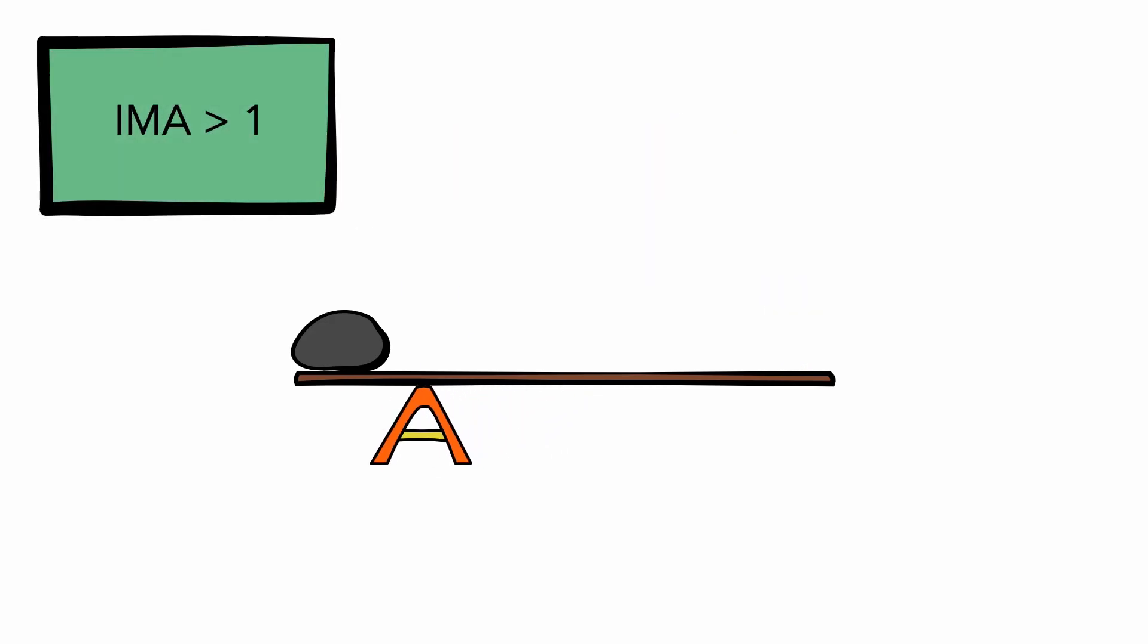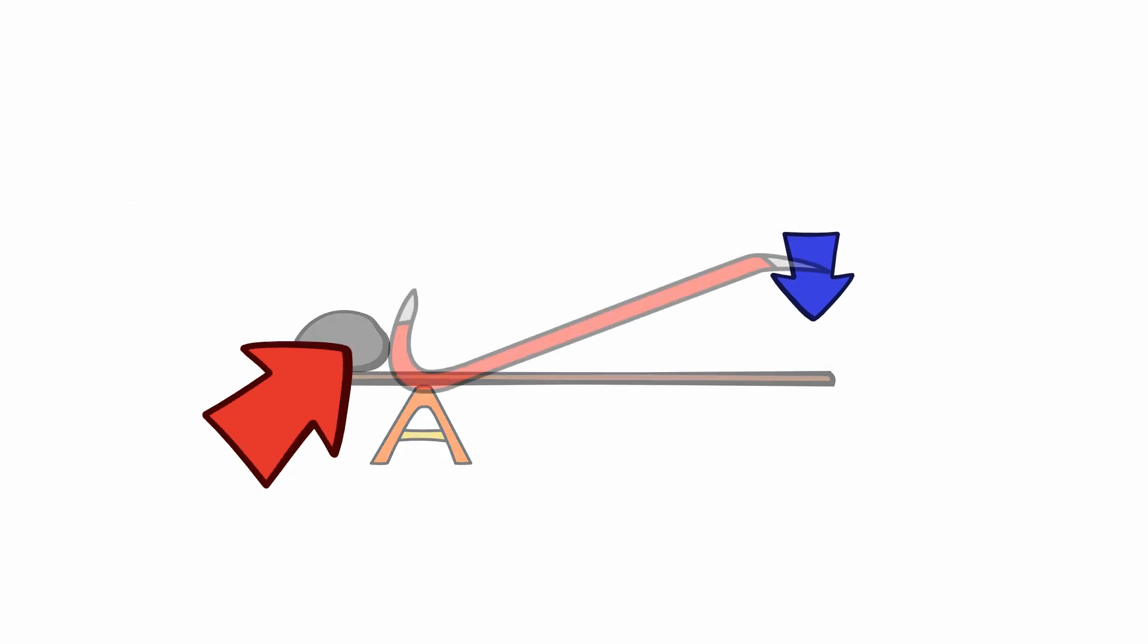When mechanical advantage is greater than 1, the benefit is the greater force produced compared to the force that's applied. In other words, it makes it easier to move something. A crowbar is a great example of this. It makes it easier to pull things apart.